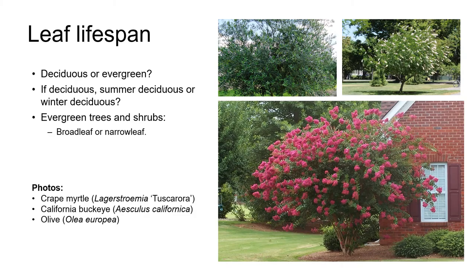One of the many ways in which we can classify plants is by the lifespan of their leaves. We can describe plants as being evergreen or deciduous. Evergreen means they have leaves year-round, although the leaves are in a constant cycle of renewal so a plant doesn't have the same leaves for the whole of its life. Think of our iconic native tree the Coast Redwood, Sequoia sempervirens — it's evergreen but if you have one on your property you'll know that it's constantly shedding leaves.